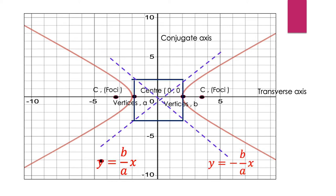Now we are going to plot the asymptote lines. The strategy to get the asymptote lines: Step 1, plot the vertices. Then plot the endpoints of the conjugate axis. Then form a rectangle. Finally, draw a line along the diagonals of the rectangle. We obtain the asymptote lines with equations y = (b/a)x and y = -(b/a)x.